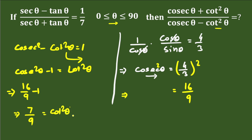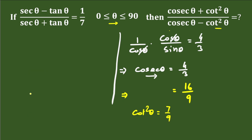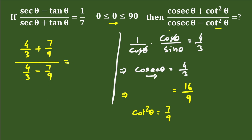So we have cosec θ equals 4/3 and cot²θ equals 7/9. Now in the final step we substitute these values. The numerator is cosec θ plus cot²θ, which is 4/3 plus 7/9. The denominator is cosec θ minus cot²θ, which is 4/3 minus 7/9.